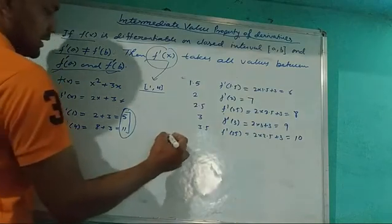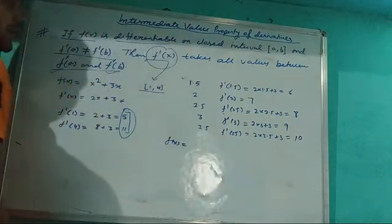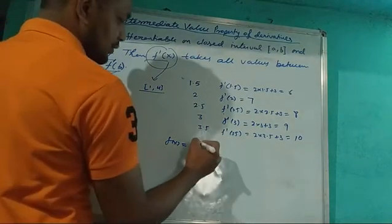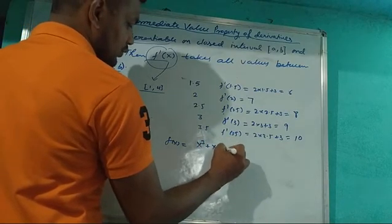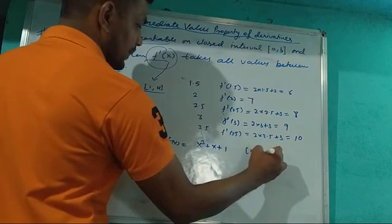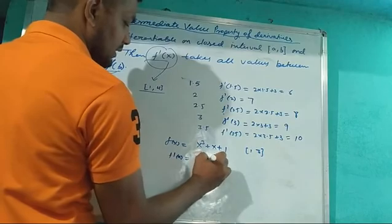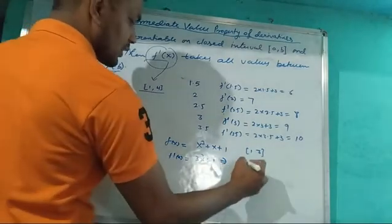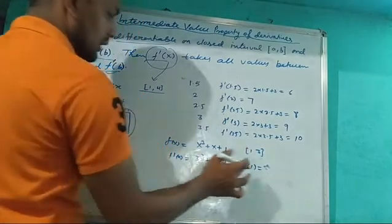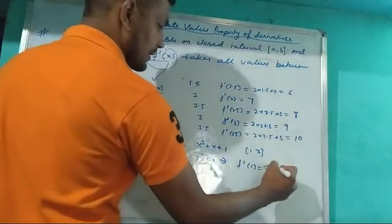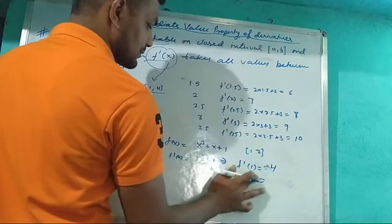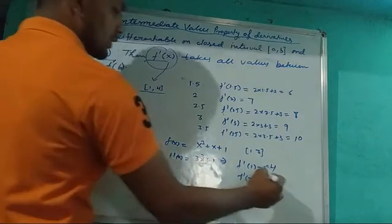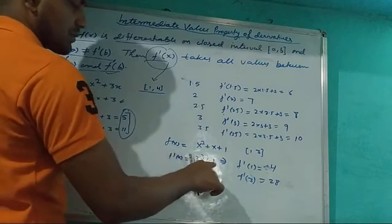Let us understand this with another example. Suppose f(x) = x³ + x + 1 on the interval [1, 3]. Then f'(x) = 3x² + 1. So f'(1) = 3(1) + 1 = 4, and f'(3) = 3(9) + 1 = 28.